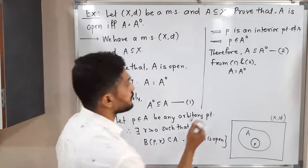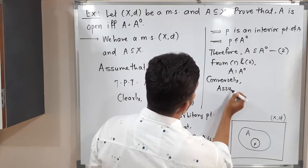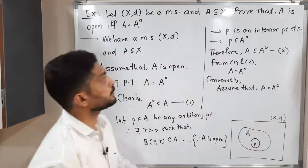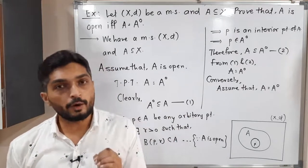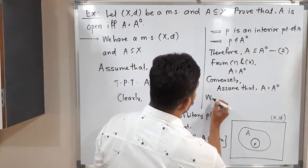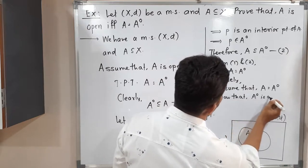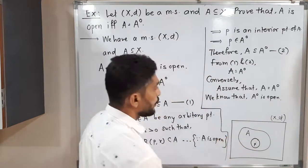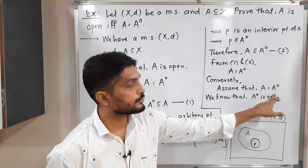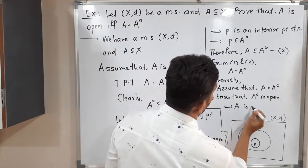After that we have to prove the converse part. Conversely, assume that A is equal to A interior, and we have to prove that A is an open set. We know — as already proved in previous videos — that A interior is an open set. Since A and A interior are equal, and A interior is open, we can say A is also open.